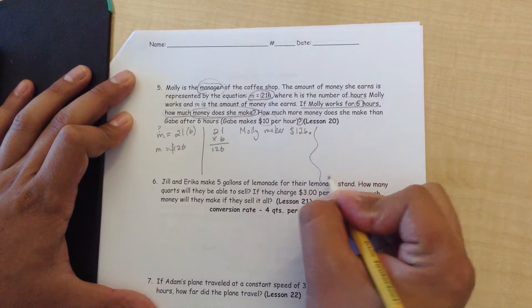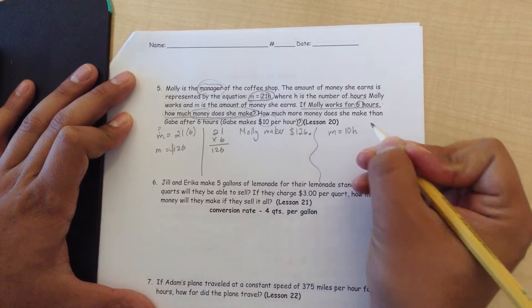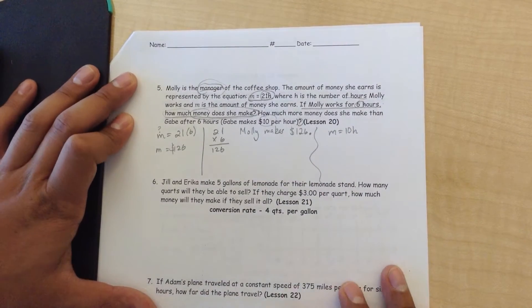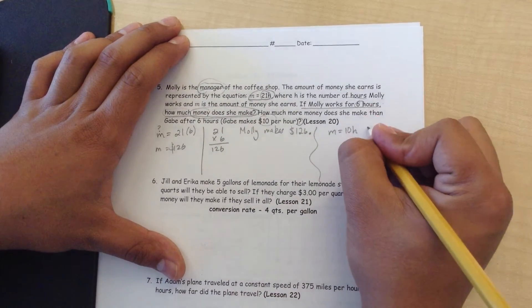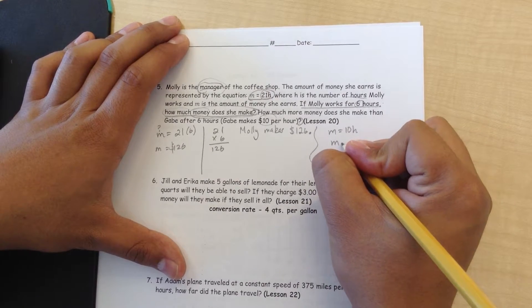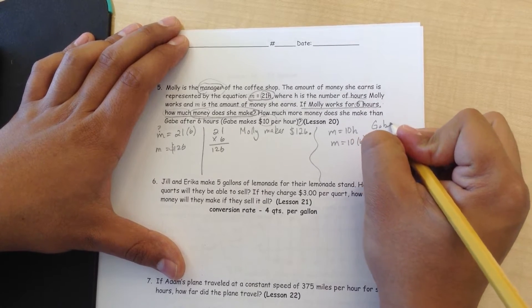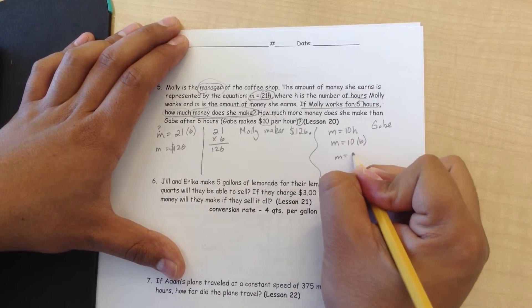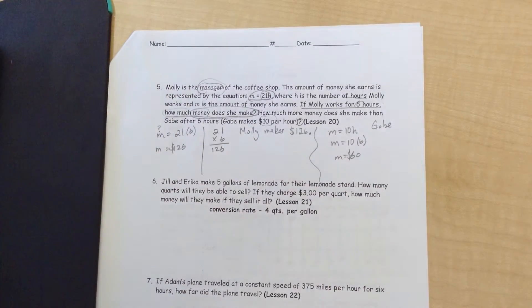Gabe works at $10 per hour, so we can assume that Gabe is an employee. So, his formula would actually be M equals 10H. If Gabe works 6 hours, we can put M equals 10, parenthesis 6. Remember, this is Gabe. So, M equals $60. 10 times 6.